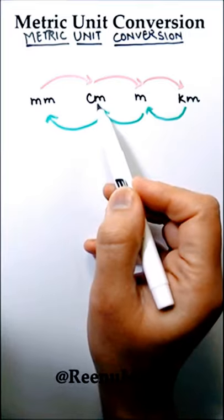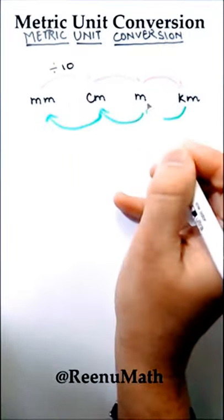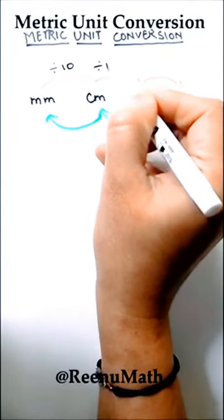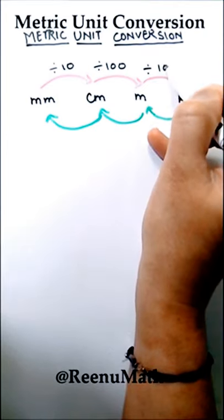To convert from millimeter to centimeter you need to divide by 10. From centimeter to meter you need to divide by 100. From meter to kilometer you need to divide by 1000.